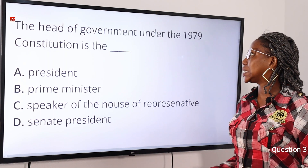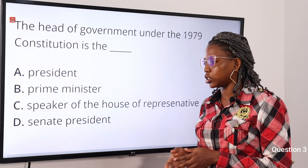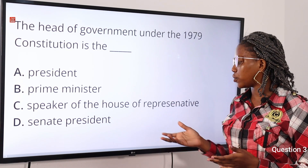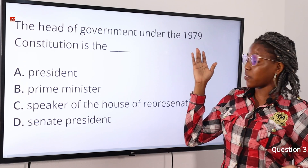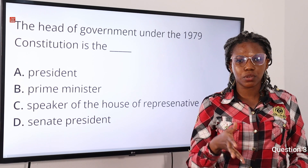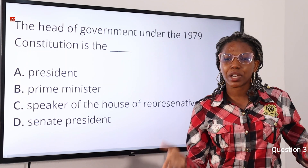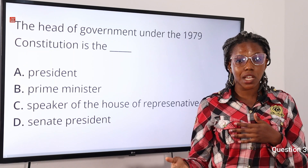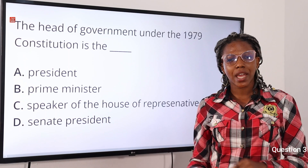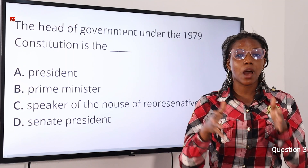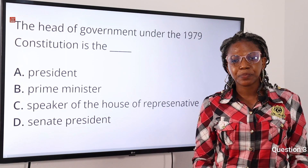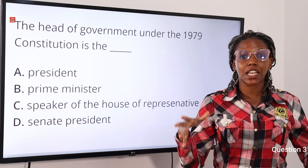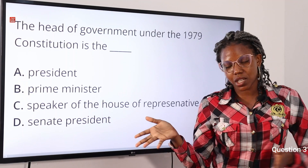Question three: the head of government under the 1979 constitution is — option A: president, option B: prime minister, option C: speaker of the house of representatives, option D: senate president. The answer is option A, president. Before 1979 we had the 1963 constitution, which operated the presidential system but had the president as ceremonial head of state in the person of Nnamdi Azikiwe, and the prime minister as head of government in the person of Tafawa Balewa. In 1979, the presidential system combined both roles in the president.